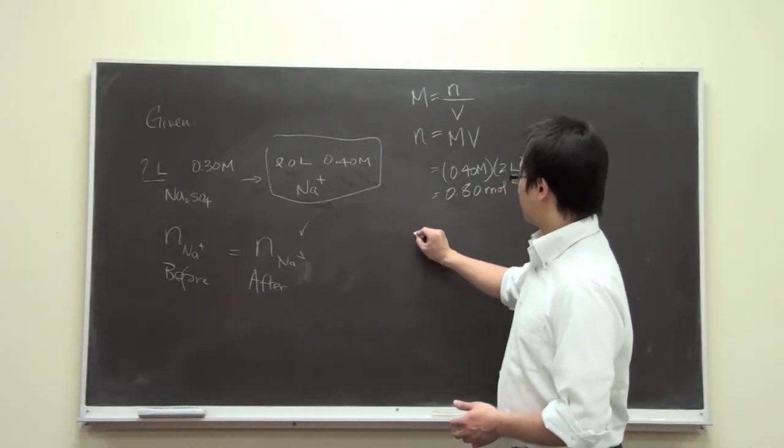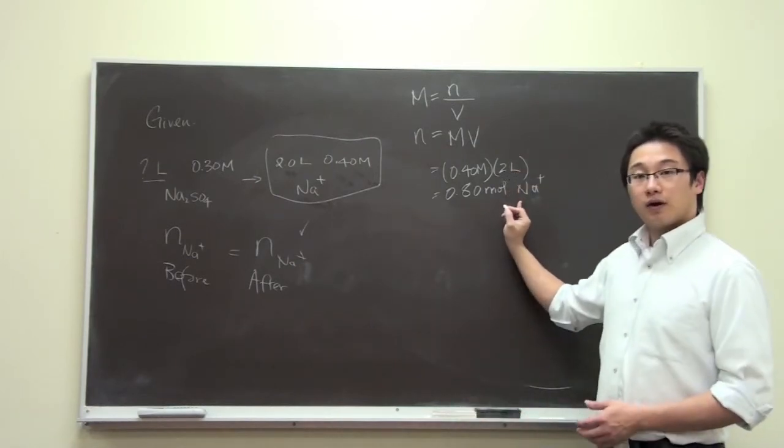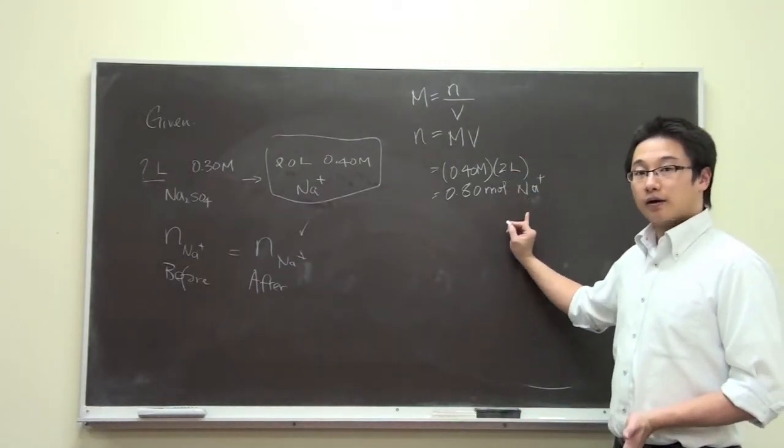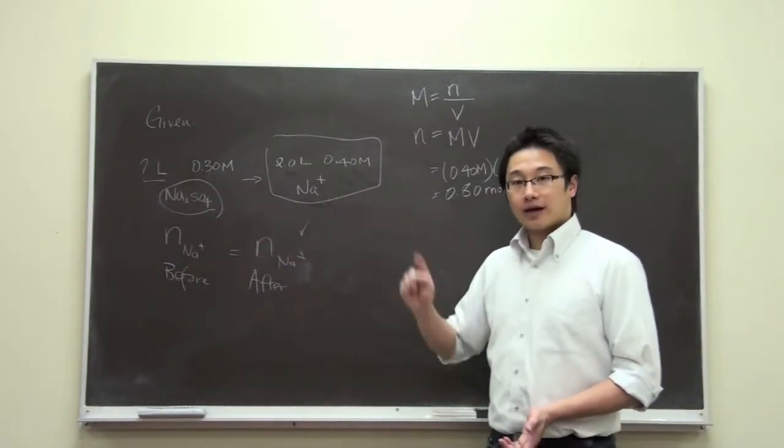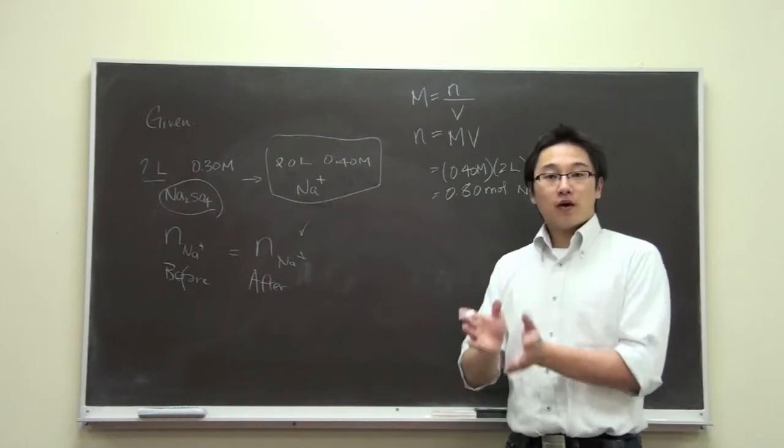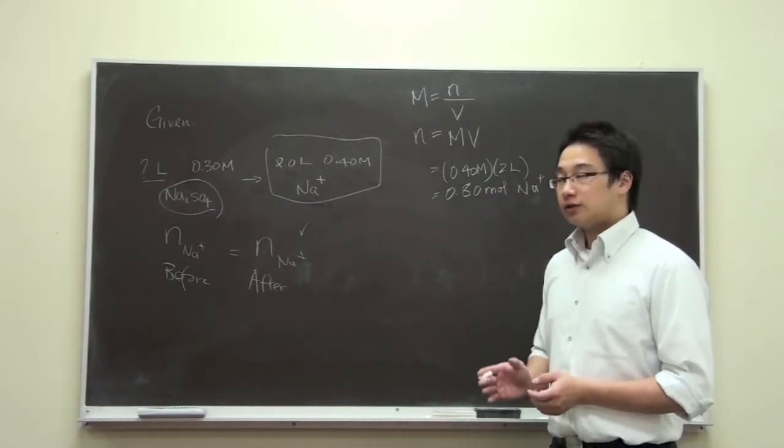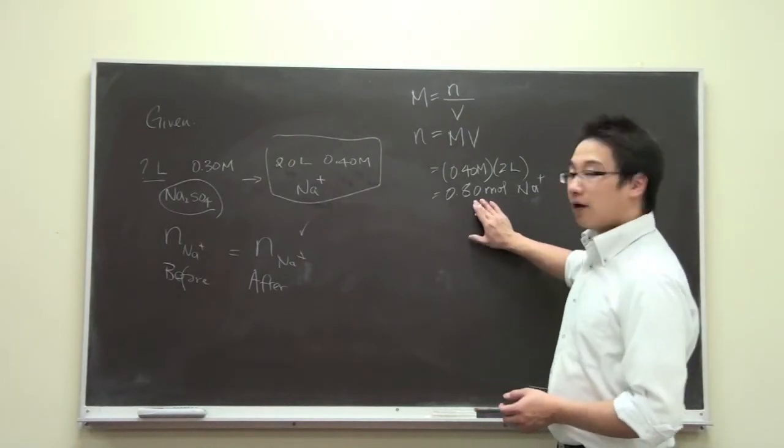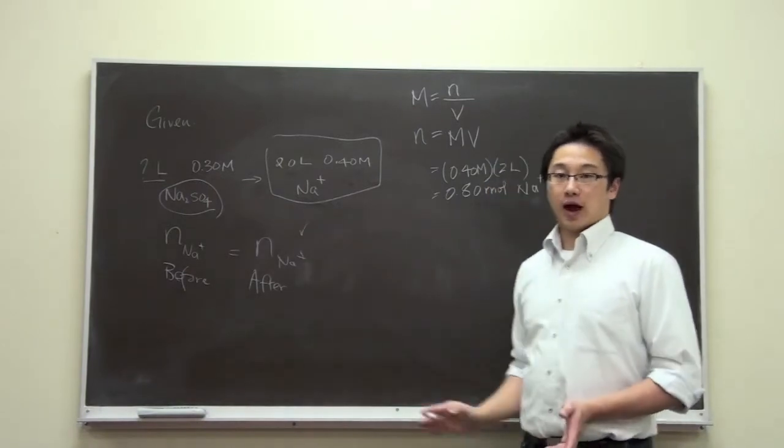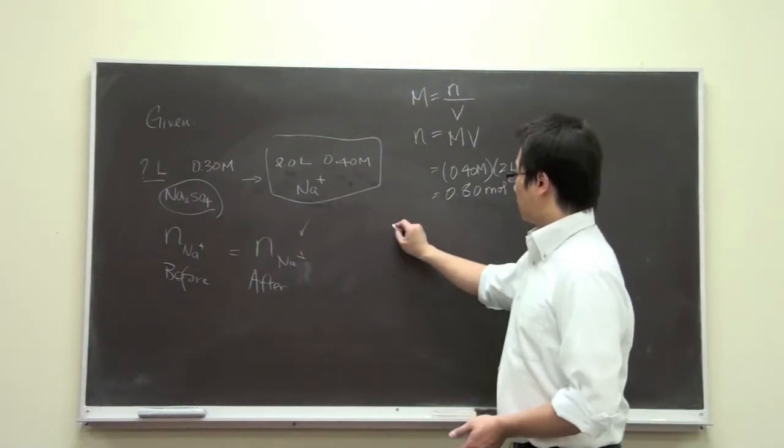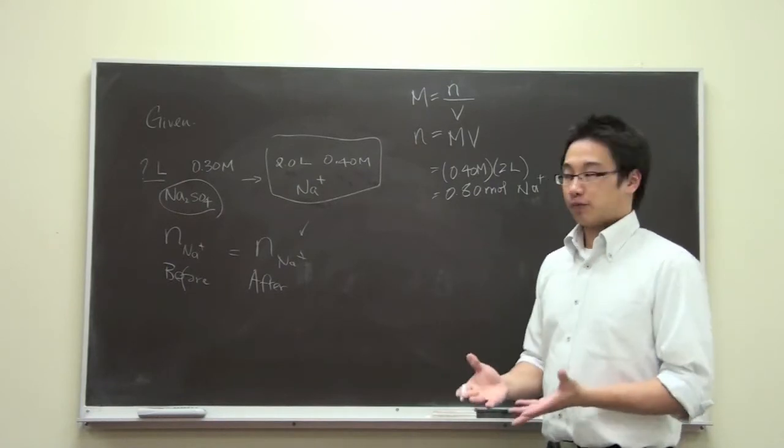And now we are going to make use of this concept to solve this problem. Now what we need to do here is that we have so many moles of sodium ion, but we are talking about this compound, and in this compound, for each one of the compound, we have two sodium ions. So what we need to do is that based on this number of moles, how many of that compound do we need? So it's simply a small ratio problem.